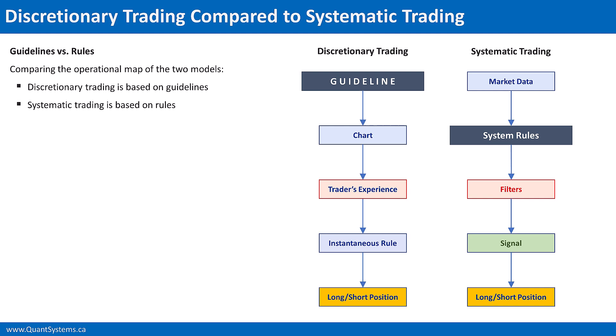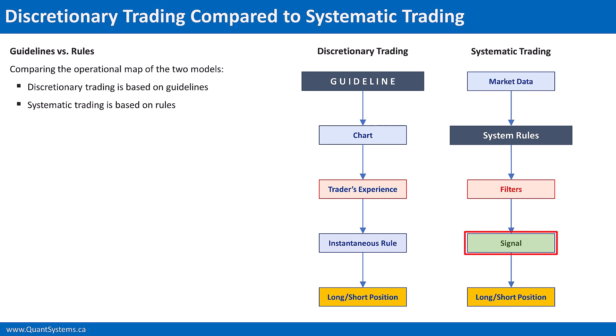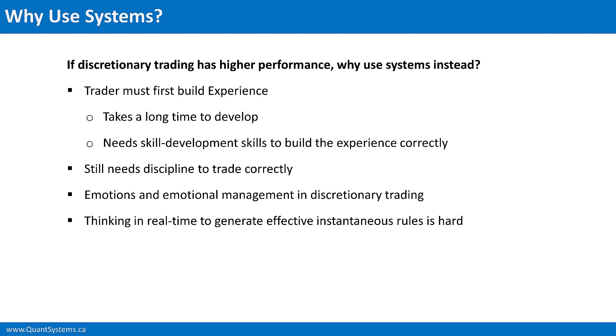In the systematic trading model, market data is fed into system rules. System rules are at a lower layer compared to where the market data or chart is. If those rules match something on the chart, there is a potential signal, but that signal needs to get filtered. So every signal generated has to pass through a certain number of filters before it can be validated. Once the signal is valid, the system can take a trade, which usually results in an order in the market for a new position. A system is therefore bound to be less flexible compared to a trader operating based on guidelines. So why would anyone want to trade based on systems?